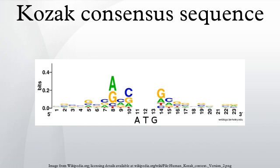Variations in the consensus sequence include: GCC, GCC(RCC)AUGG, ANNORFN, ANNORG, ACORG, and GACORG.